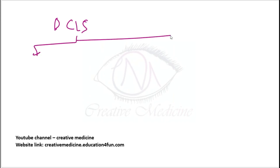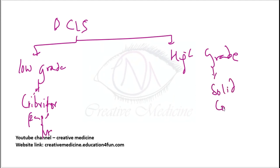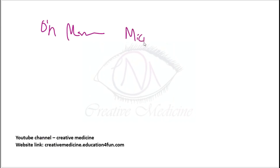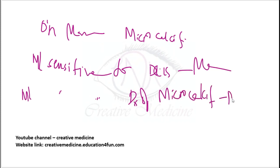DCIS is divided into low grade and high grade types. Low grade DCIS shows cribriform, papillary, and micropapillary patterns. High grade DCIS shows solid pattern and comedocarcinomas. On mammography, microcalcifications are seen due to necrosis. The most sensitive investigation for microcalcifications is mammography, whereas the most sensitive investigation for DCIS overall is MRI.